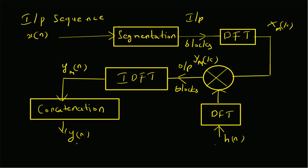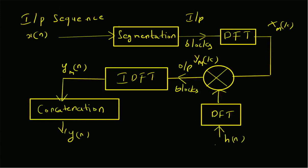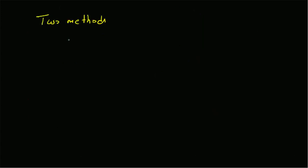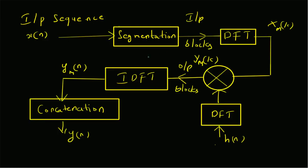We concatenate the output blocks properly to get the actual output y(n). For this segmentation and concatenation, two methods exist: the first one is overlap-save and the second one is overlap-add. By using these two methods we can do the segmentation and concatenation properly, thus performing linear filtering of a long data sequence.